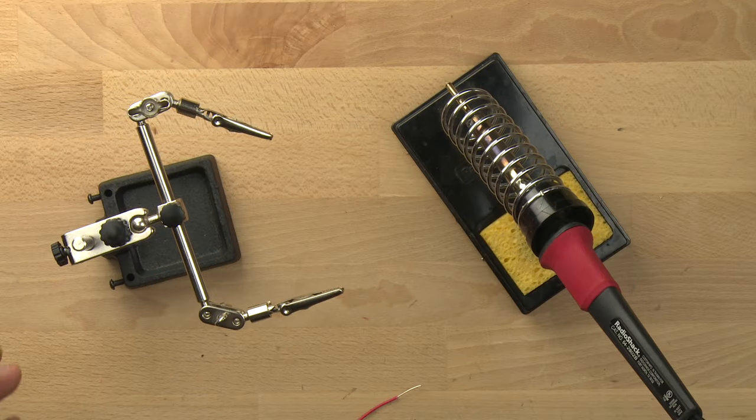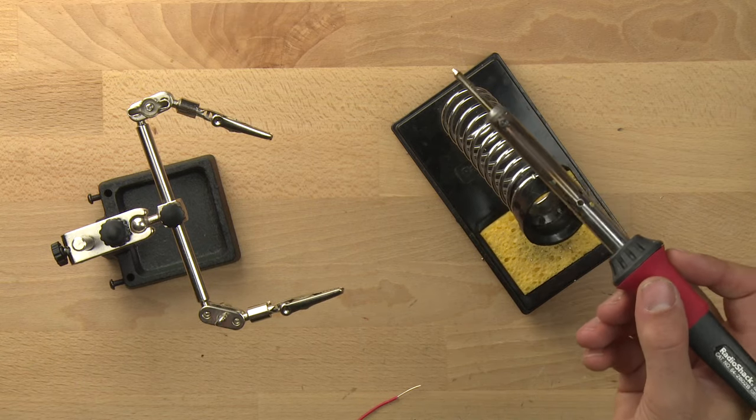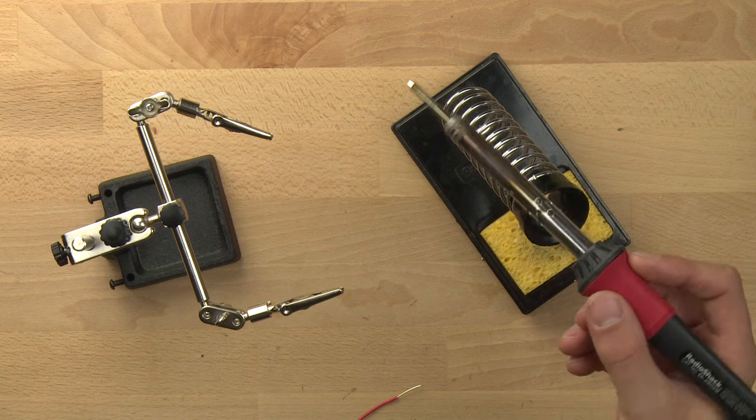So in this video we're going to talk a little bit about soldering. This is a soldering iron. The tip of the soldering iron gets really hot. It can get up to 700-800 degrees hot or hotter depending on the iron.